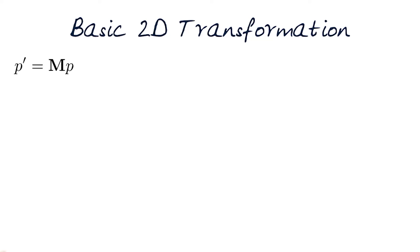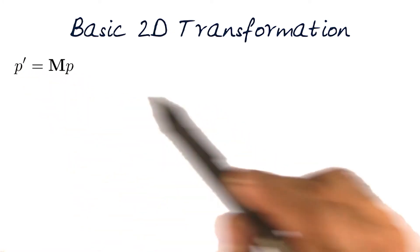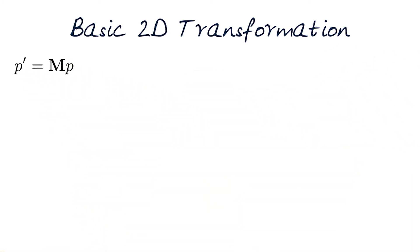Now remember, we started off by saying we want 2D transformations where we basically have a matrix M to give us values of any point P to give a point P prime.